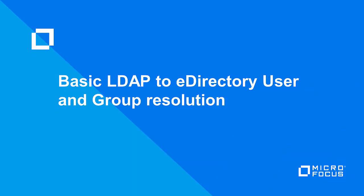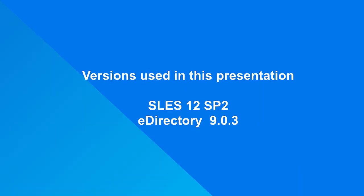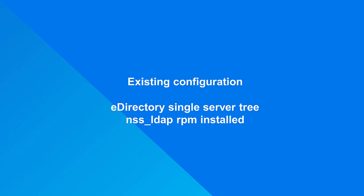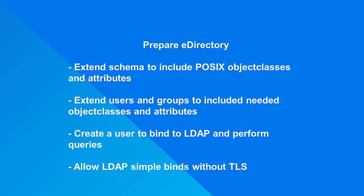This tutorial is a basic introduction to configuring the OpenLDAP client to resolve users and groups located in eDirectory. The software versions used are SUSE Enterprise Linux 12 SP2 and eDirectory 9.0.3. This tutorial assumes an existing configuration consisting of a single server eDirectory tree and NSS LDAP RPM already installed. The first four steps will be to prepare eDirectory with the information necessary to resolve users and groups by NSS LDAP.